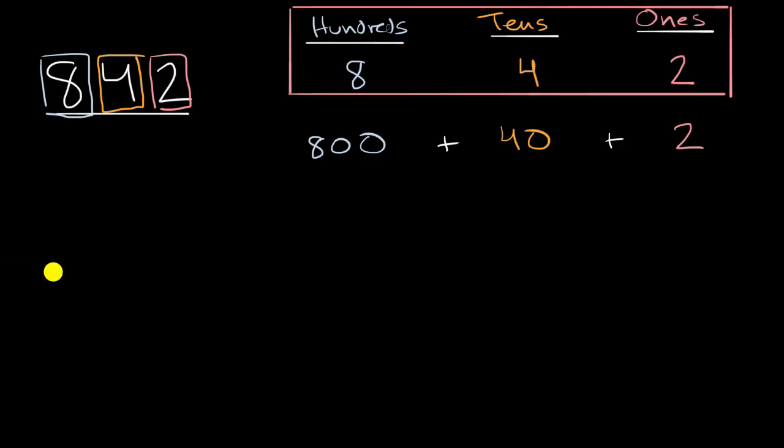Let's say that we had the following number. So this number right over here. And let's put that into a place value table as well. So how many hundreds am I dealing with? How many tens? And then how many ones? Pause this video again and see if you can figure that out. Fill out this place value table.